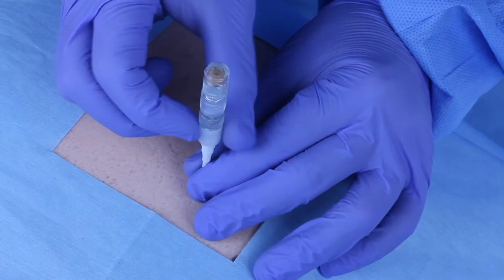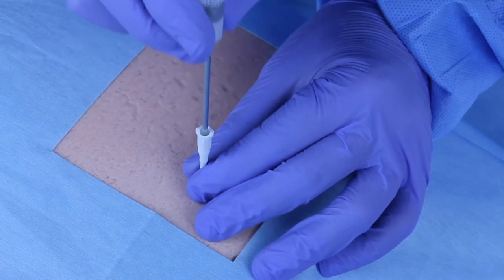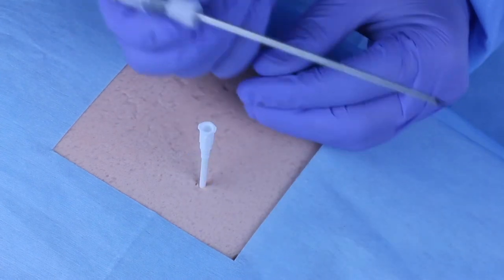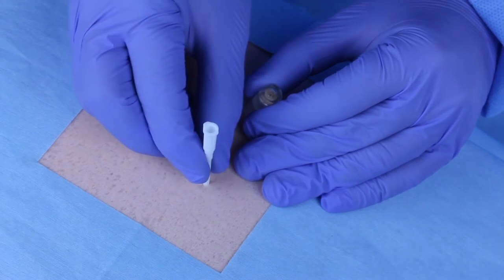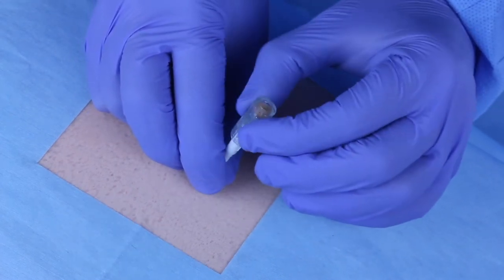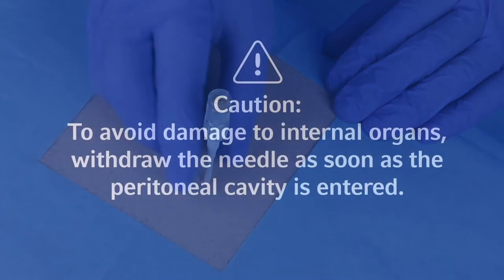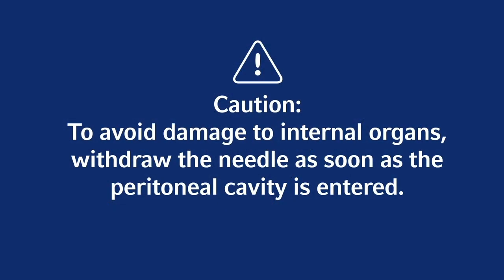Immediately upon entry into the peritoneal cavity, hold the introducer in place and withdraw the needle completely. Remove check valve from needle hub and reinstall on introducer catheter hub. To avoid damage to internal organs, withdraw the needle as soon as the peritoneal cavity is entered.